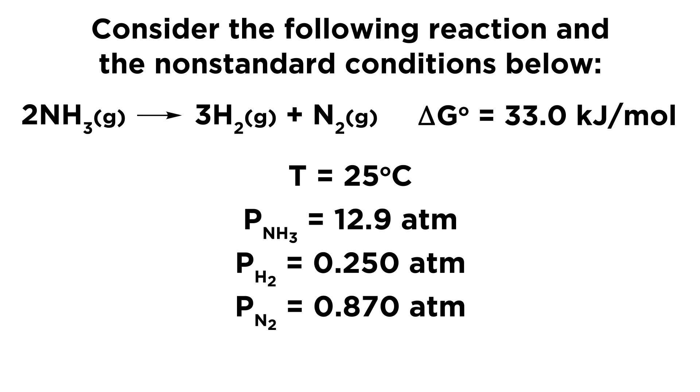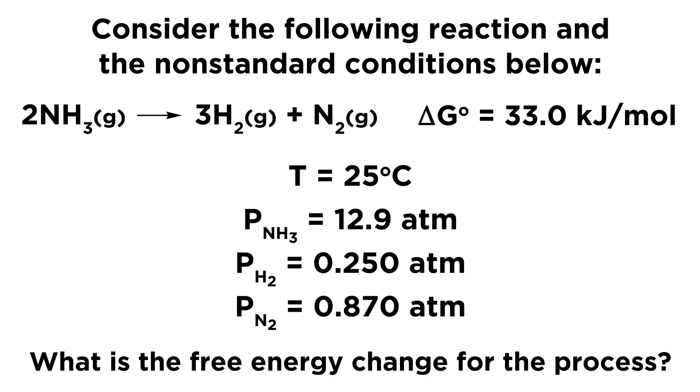Now we call these non-standard conditions because we are not at equilibrium. We are also not at standard temperature. So the free energy change is not going to be the standard free energy change. It's going to have a different value because the standard free energy change is calculated at standard conditions. If we are not under standard conditions, we have a different delta G value. So we are going to want to calculate that here. What is the free energy change for this process?